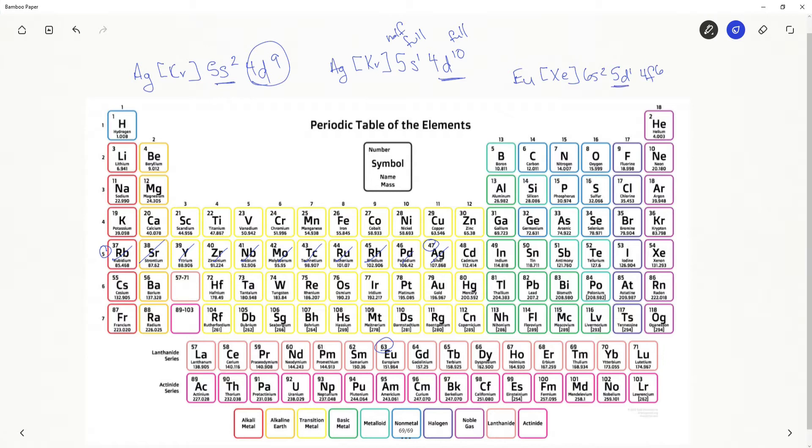It's going to take this one electron in the 5d and it is going to promote it to the 4f. So what we find is that the electron configuration for europium is actually this.